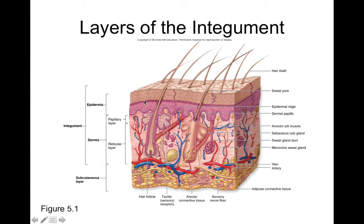We also find Meissner's corpuscles in the papillary layer, which are involved with tactile sense and some vibration sense. Deep to that we have the reticular layer of dermis, made of dense irregular connective tissue. It's a little bit tougher, but it contains the majority of the accessory structures of your skin — things like hair, the hair follicle, tactile receptors, free nerve endings, and a root hair plexus, which can help detect changes in the position of your hair.